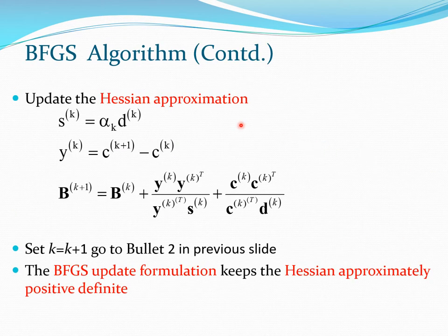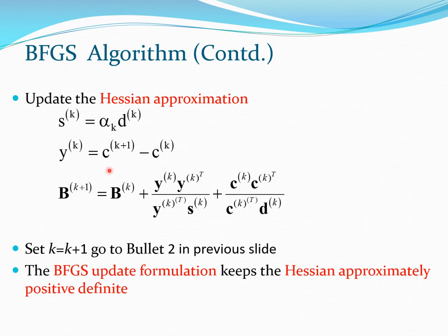The next stage is where the BFGS method comes in — building the Hessian matrix. You use two vectors: sk, which is the step size times the search direction dk, and yk = ck+1 − ck. Since you have xk+1, you can calculate ck+1 as the gradient at xk+1. You plug both into the BFGS formula to get a new updated matrix.